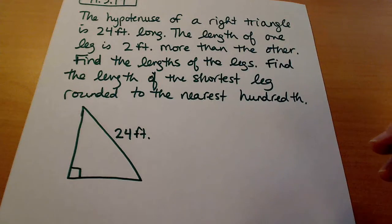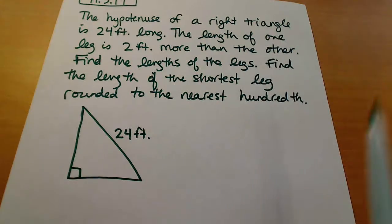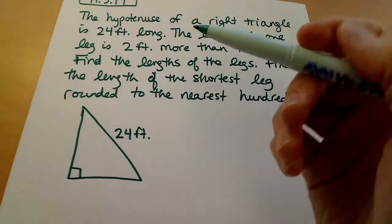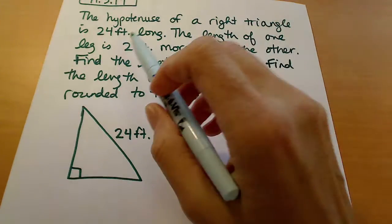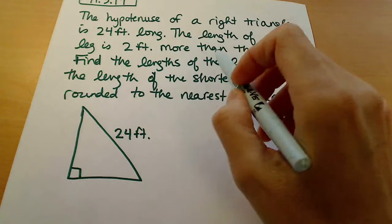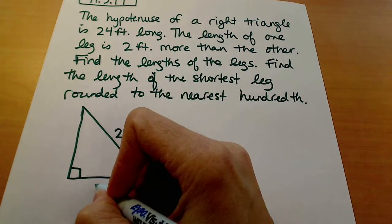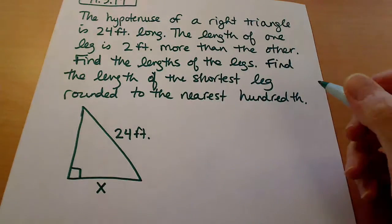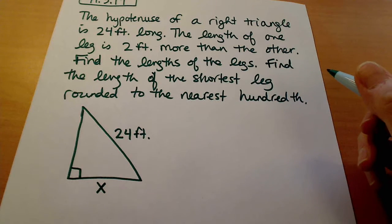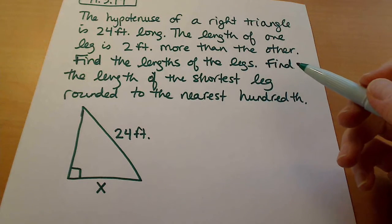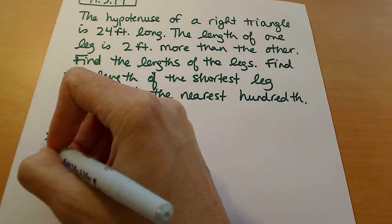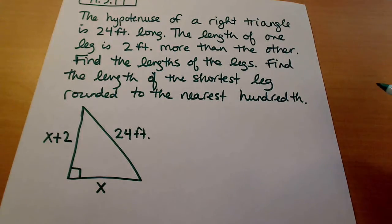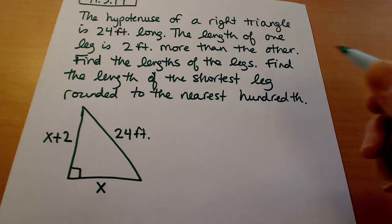If we use the other information given in the problem, we can actually create an equation. They tell us that the length of one leg is two feet more than the other, so if I let the length of one leg be x, then the other leg is going to be two more than that, which would be x plus 2.